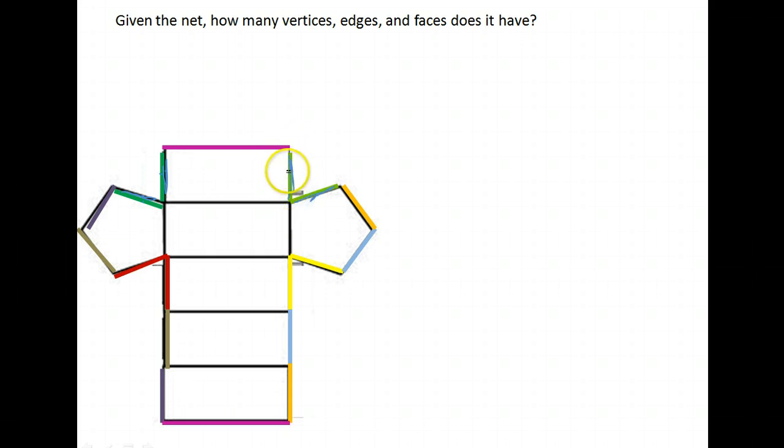The same thing happens with the vertices. Notice this vertex here and this vertex here, they're the same vertex. When we fold this figure together, those two will come together. The same over here, this vertex and this vertex. That's exactly the same vertex. And as we go all down the figure, notice here, this vertex and this vertex, they would fold together. These would fold together.